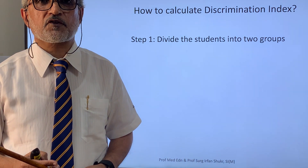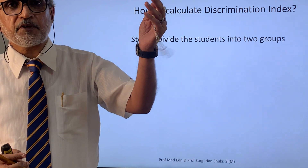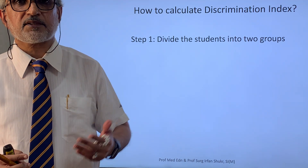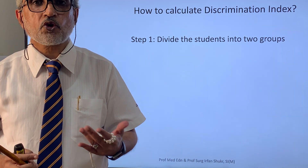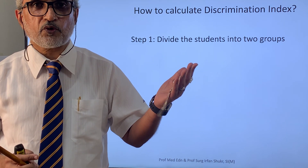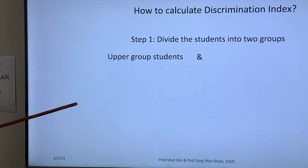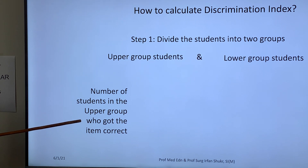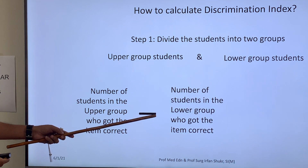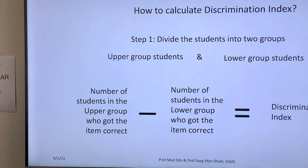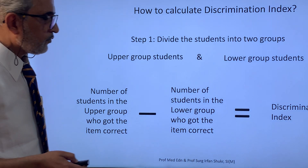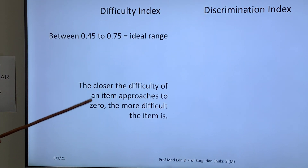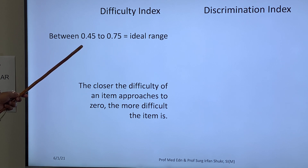To calculate the discrimination index, step one is to divide the students into two groups in order of scores. For example, if there are 100 students, the top 50 will be those who scored higher marks and the lower 50 would be those who scored lesser marks — forming a higher score group and a low score group. The discrimination index is calculated as the number of students in the upper group who got the item correct minus the number of students in the lower group who got the item correct.